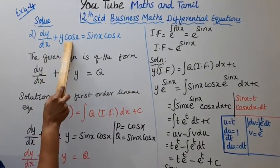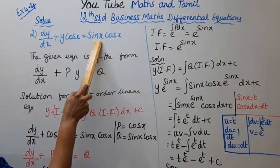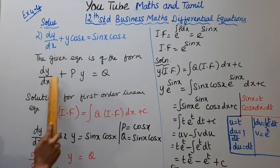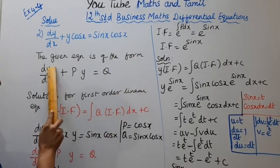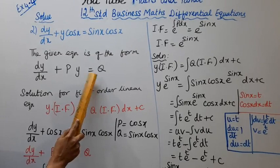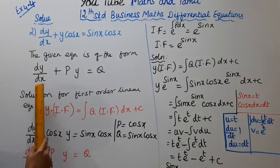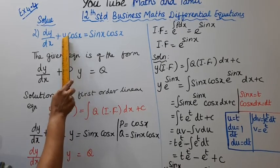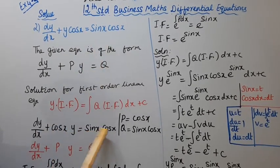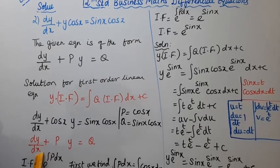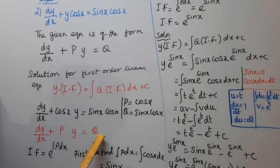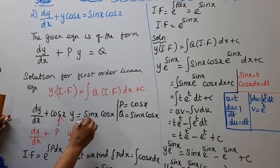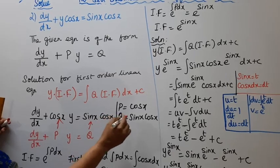Second sum: dy/dx + y·cos(x) = sin(x)·cos(x). The given equation is of the form dy/dx + Py = Q, that is, a first order linear equation. Here P = cos(x) and Q = sin(x)·cos(x).